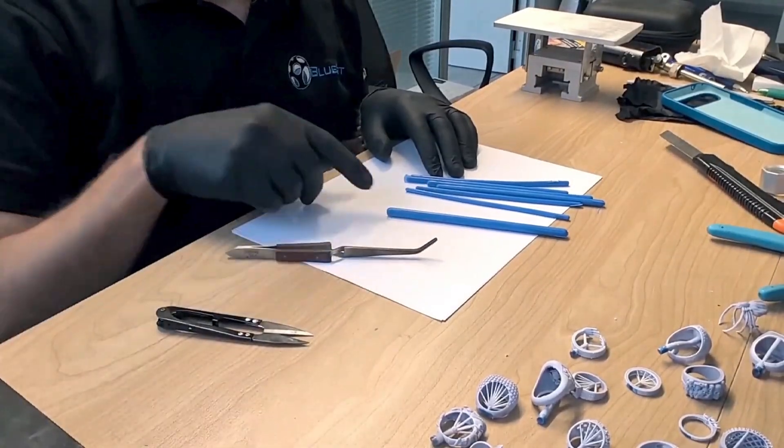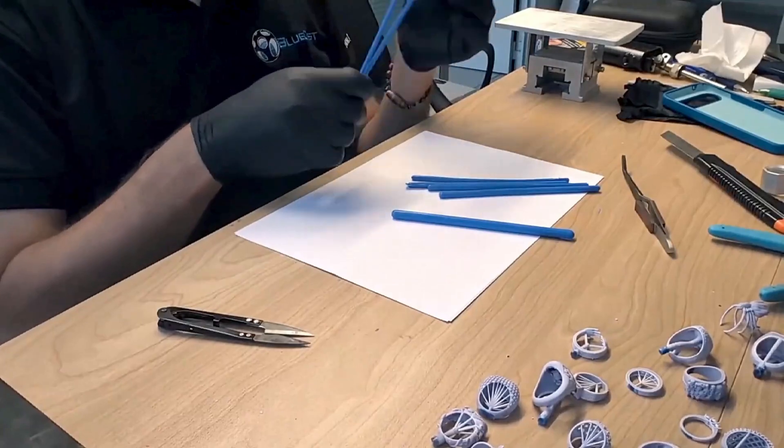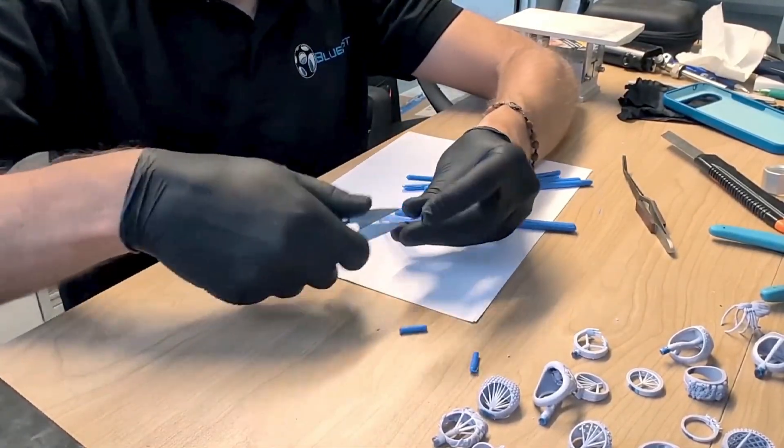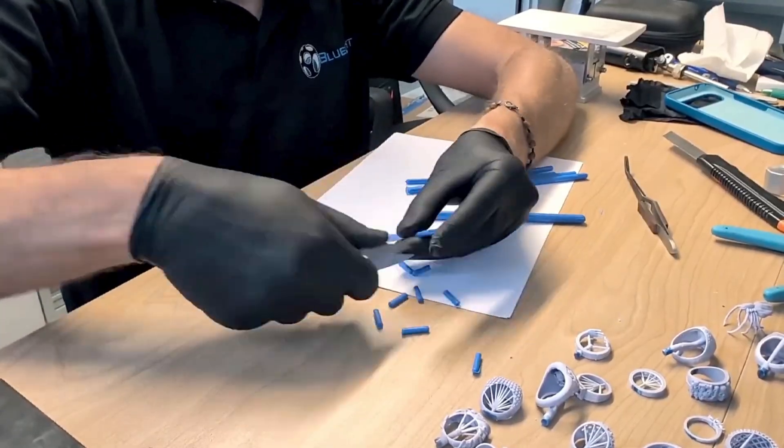The ultimate step is to weld the wax rods to the models. The sprues are cut so that the model is in the middle between the central post and the edge of the flask. I'll proceed from the smaller models using 3mm rods, then move on to the larger ones.